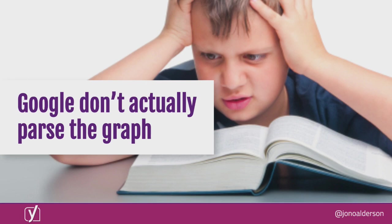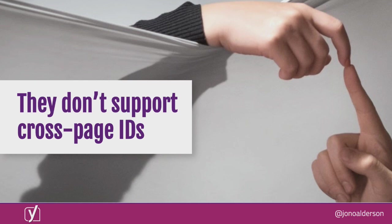To top it all off, Google doesn't actually parse the graph. They look for string matches in the content of your JSON-LD and extract relevant topics. Nobody at Google is actually parsing the graphs we're producing. They're using arbitrary logic — 'if it contains this bit, extract it' — and they'll only show your logo if it's attached to an organization on a leading edge of the relationship, which frequently it isn't.